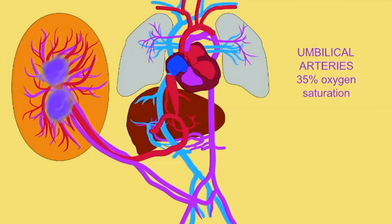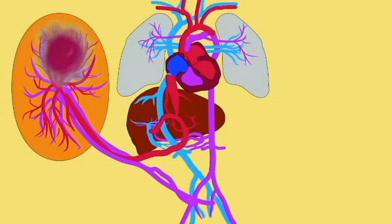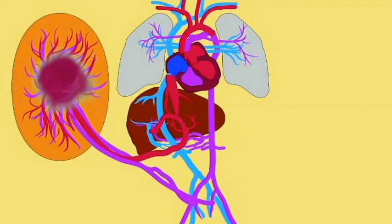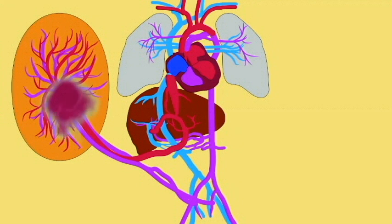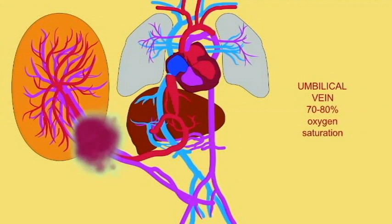In the placenta, gas exchange occurs so that the blood which leaves the placenta, traveling through the single umbilical vein, is 70 to 80% saturated with oxygen.